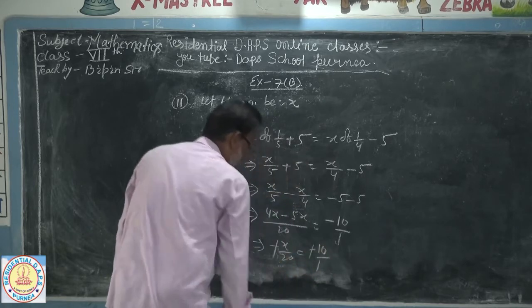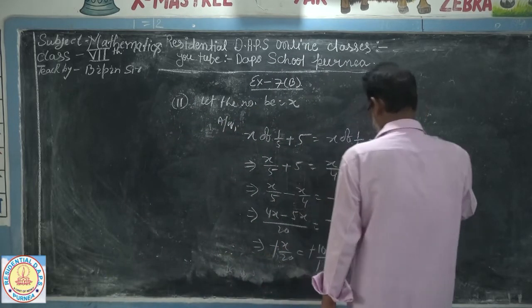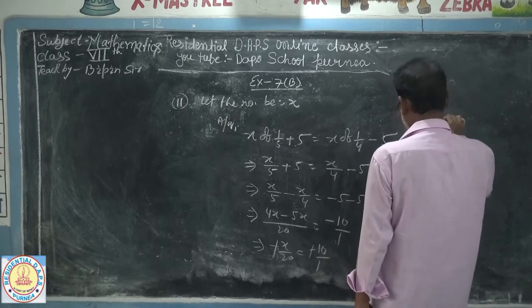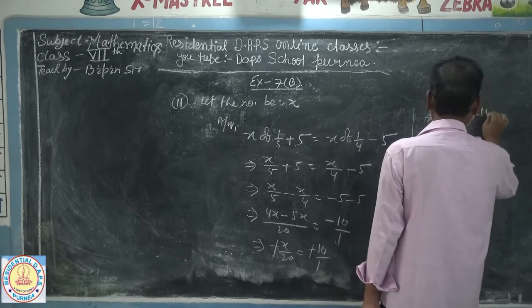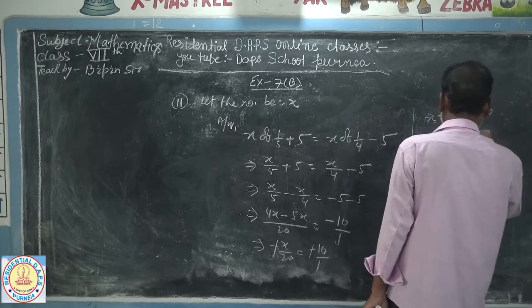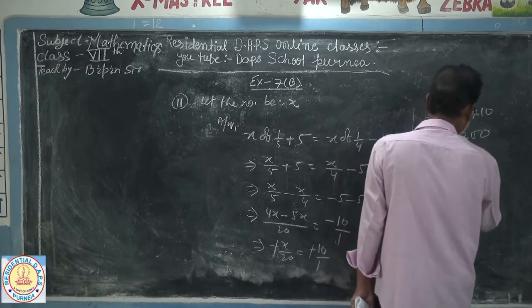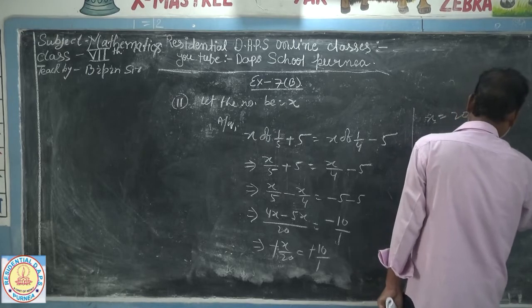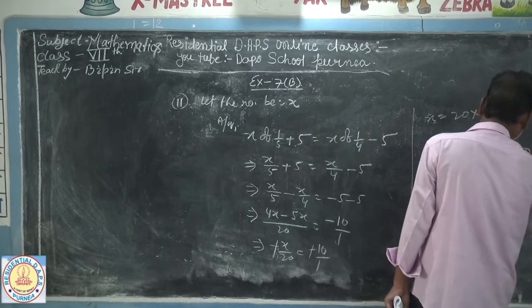Both side negative signs cancel. By cross multiplication, x is equal to 20 into 10, which is equal to 200. Therefore the required number is 200. Answer.